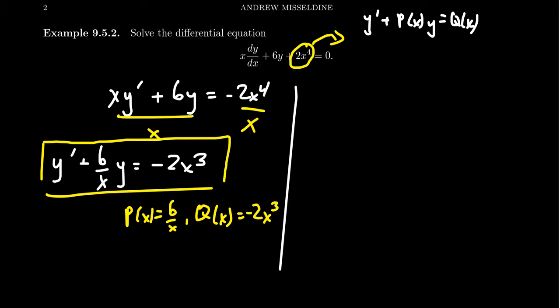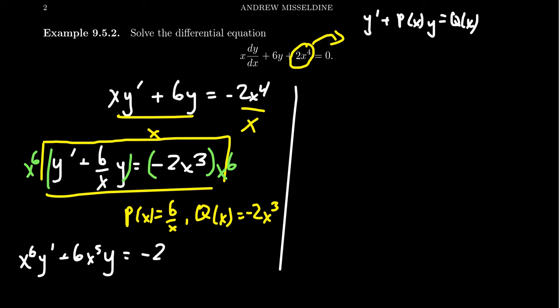Now we recognize it's in standard form. What we do next is really cool: we multiply both sides of the equation by x to the sixth. Distributing x to the sixth on the left-hand side gives x to the sixth times y prime. On the next term, x to the sixth times 6 over x — an x cancels — leaving 6x to the fifth times y. So we get x to the sixth y prime plus 6x to the fifth y equals negative 2x to the ninth.